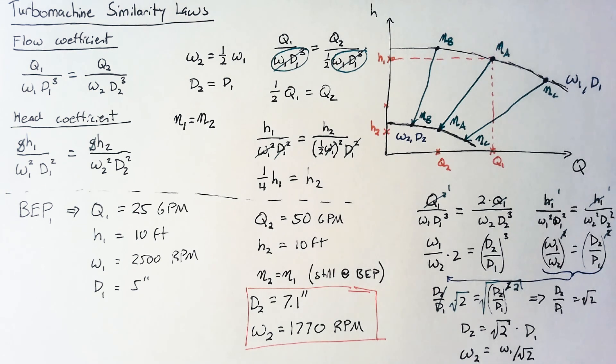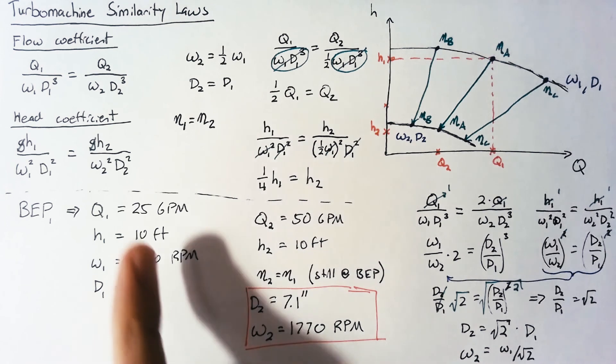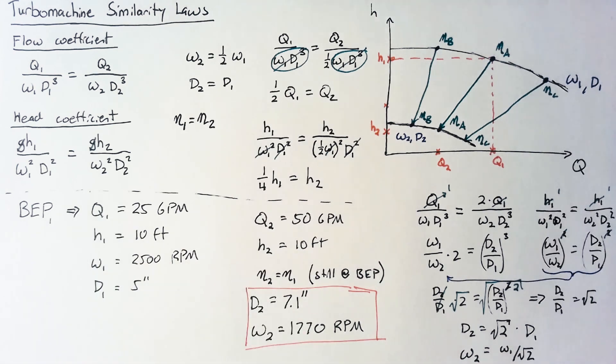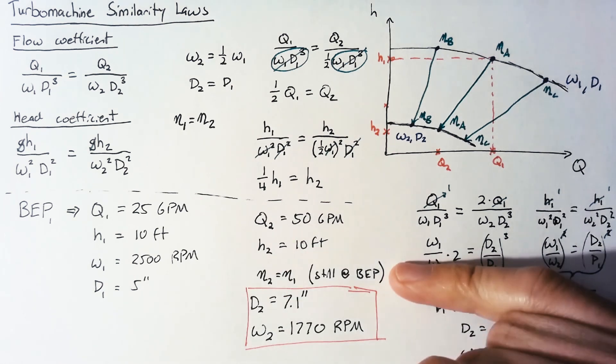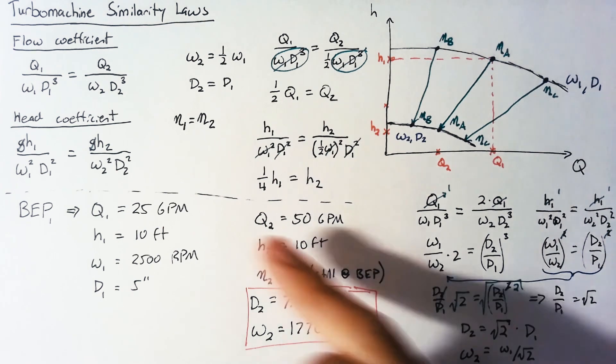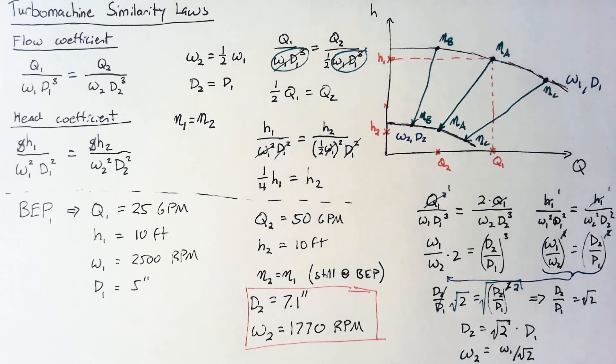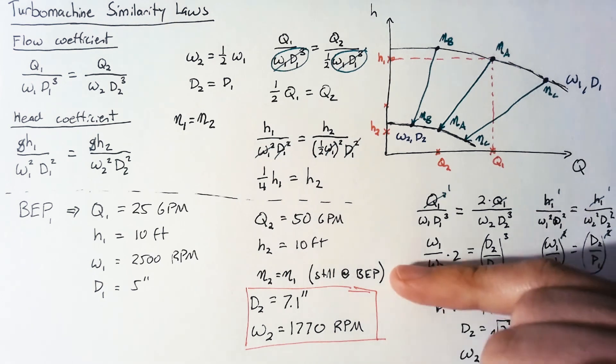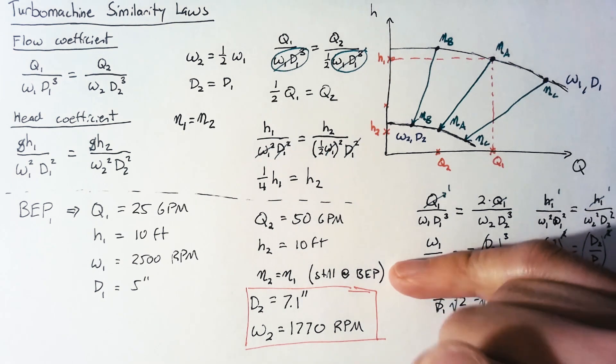The other thing that we can use these laws for is by taking an existing design and modifying it to change exactly what our operating parameters are without sacrificing our good design. We're still going to be at our best efficiency points, we're just going to be operating under different conditions. So in this case we doubled our flow rate without changing anything else and we found that we had to increase our diameter and decrease our rotational rate to maintain that good efficiency that we had to start with.